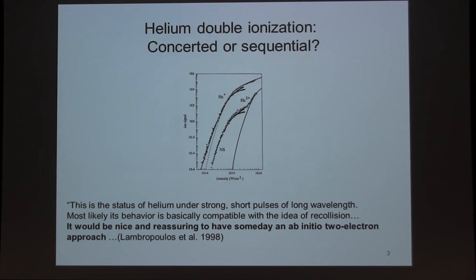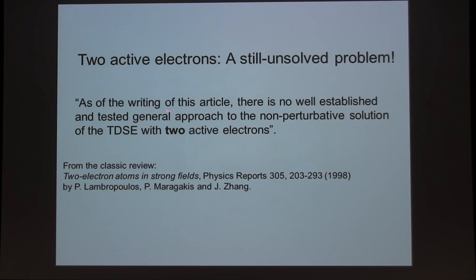I'm not somebody who's spent much of my career working looking at electrons at all. But when you're trying to get into a new field and you find out that the two-electron problem isn't solved, it says there's a lot that can really be done here if it's possible to develop some new methodology. So two-electron are still unsolved problems. And this again is from Lambropoulos. As he's writing this article, there is no well-established and tested general approach to the non-perturbative solution of the time-dependent Schrödinger equation with two active electrons.